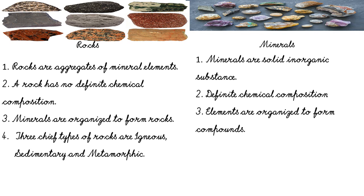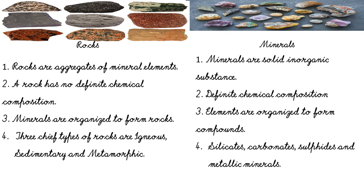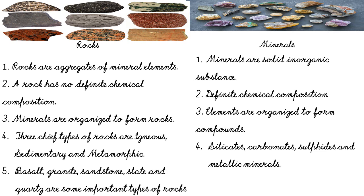Three chief types of rocks are igneous, sedimentary, and metamorphic. Four chief mineral groups are silicates, carbonates, sulfites, and metallic minerals. Basalt, granite, sandstone, slate, and quartz are some important types of rocks, whereas iron, silicon, magnesium, nickel, calcium, potassium, and sodium are abundant minerals of the Earth.